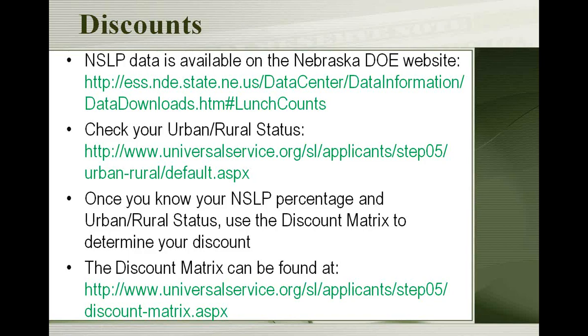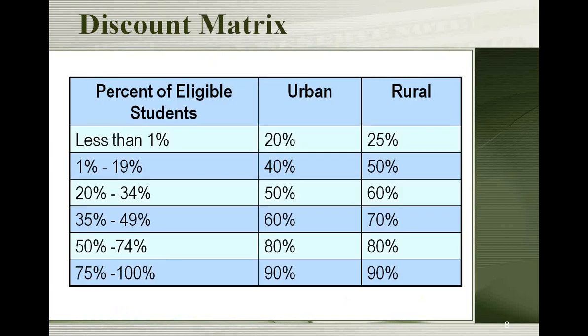The discount matrix is online, and I've also got it right here so you can see what we're talking about. You'll need to find out first what percent of students are eligible for the School Lunch Program in your area, then figure out if you're urban or rural, and that will tell you how much of a discount you may be eligible for.